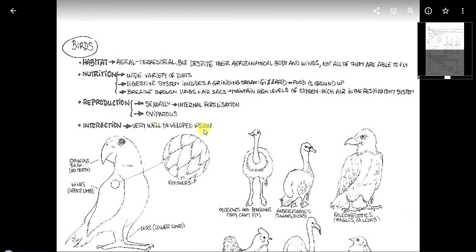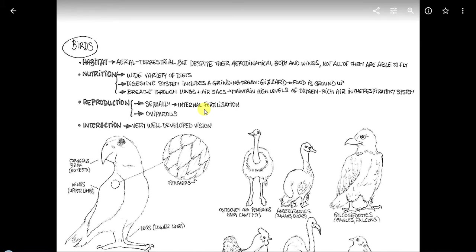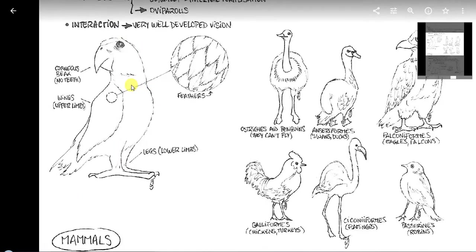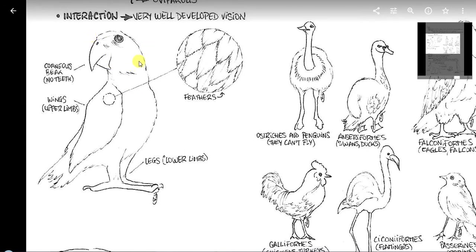Tienen, algunos de ellos, una visión muy desarrollada. Ustedes habrán oído la expresión de ojos de águila. Pues precisamente como son predadores, ellos son capaces de ver a su presa a mucha altitud, volando a gran altitud. Y lo que hacen es tirarse en picado por la presa. La presa ni se entera porque como viene de arriba y no tiene ojos en la nuca, pues no lo ve venir. Bueno, pues aquí tenemos un dibujo de un ave cualquiera. Aquí tenemos, por ejemplo, un periquito cotorra. Vemos que su cuerpo está cubierto de plumas. Tienen un pico córneo, sin dientes. Y aunque tienen cuatro extremidades, las superiores están convertidas en alas y las inferiores son patas.